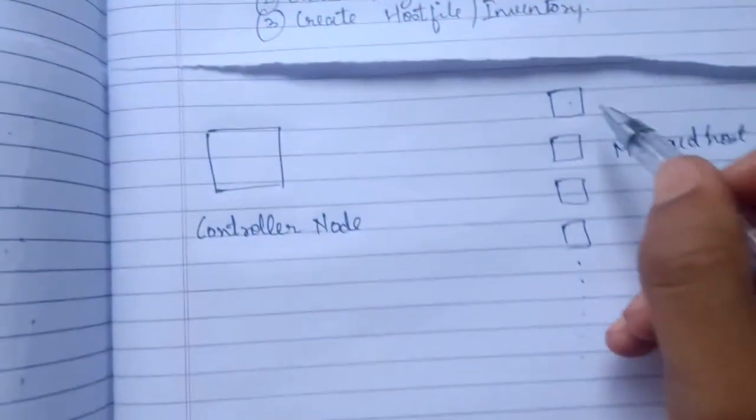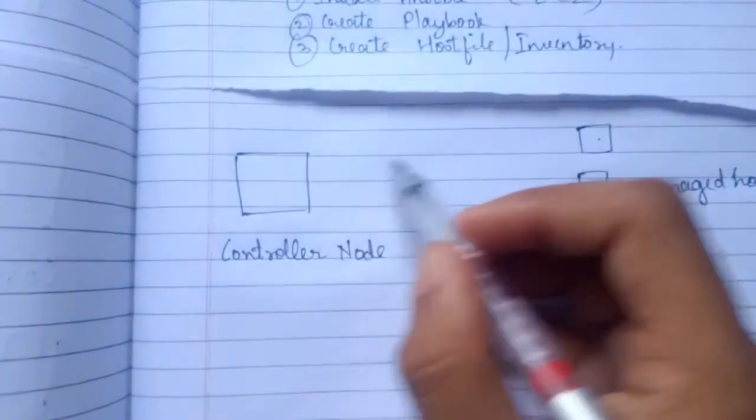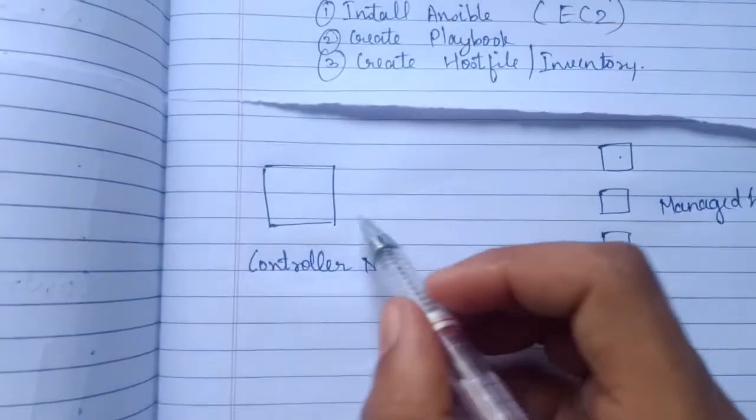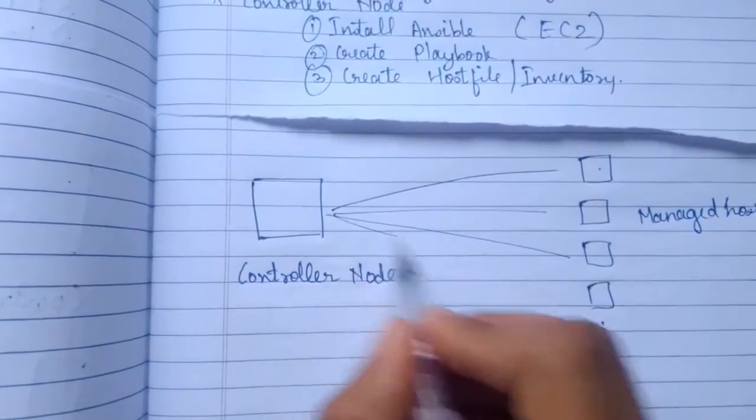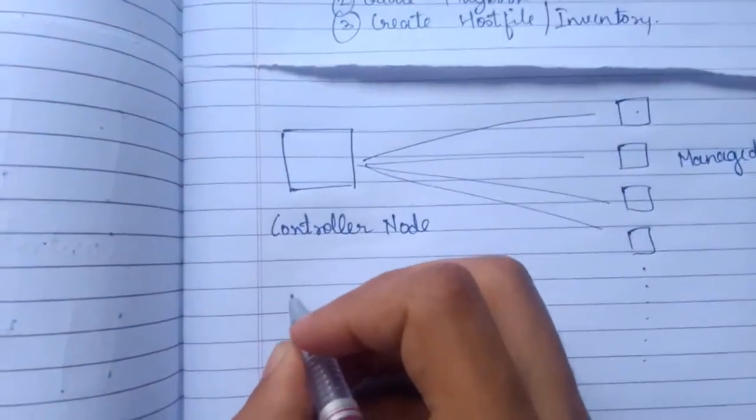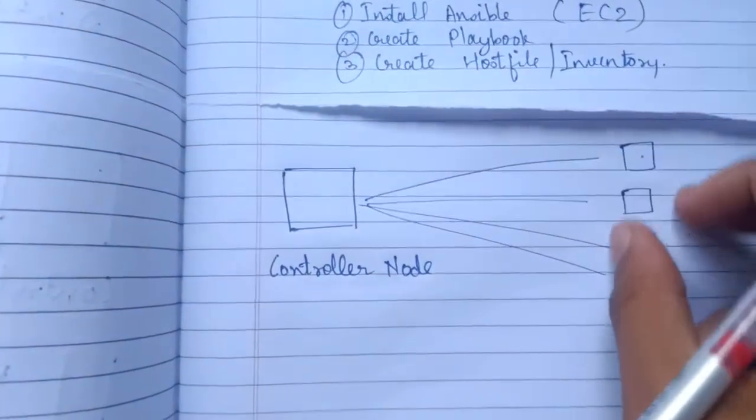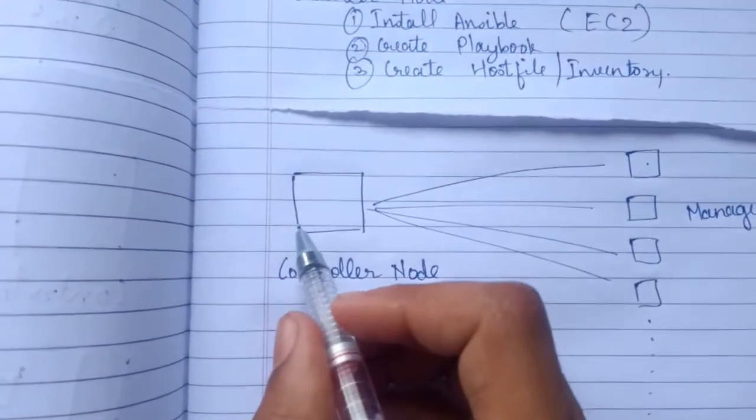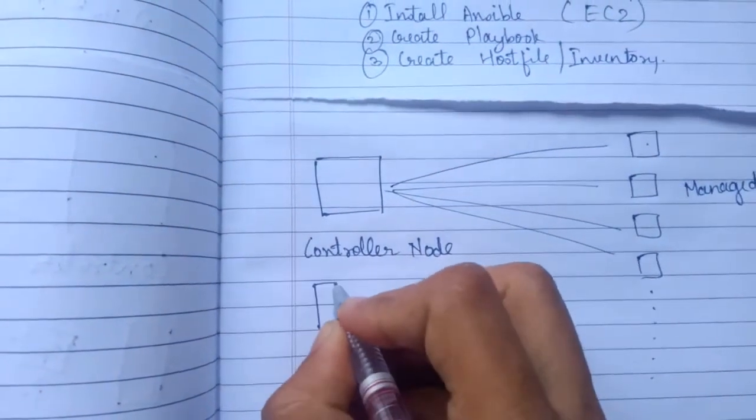As you don't have any agent, you're not going to pull anything. The controller is going to push the task on the managed host, so it is push-based mechanism. Let's take an example of the same web server. So you want to install Apache web server on all of this managed host. What you will do is you have installed Ansible on the controller node, now you will define a set of tasks.